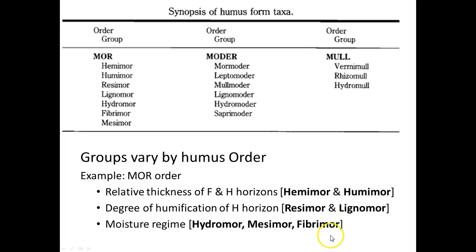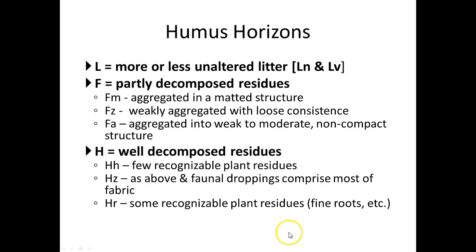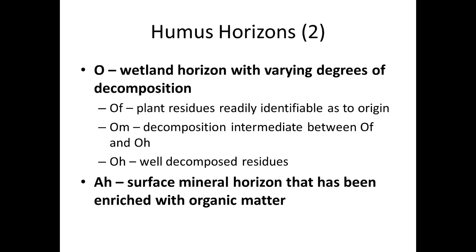Moisture regime will also differentiate mor humus forms into hydromore, mesmore, and fibromore. Characteristic horizons include FM, which reflects mycogenous activity — soil fungi tend to produce an aggregate embedded structure — while FZ and FA are indicative of soil mesofauna activity.